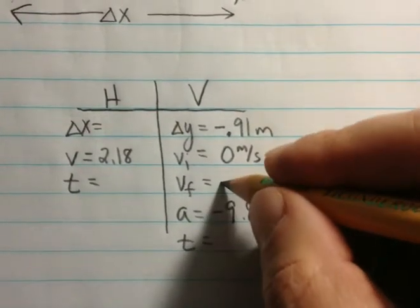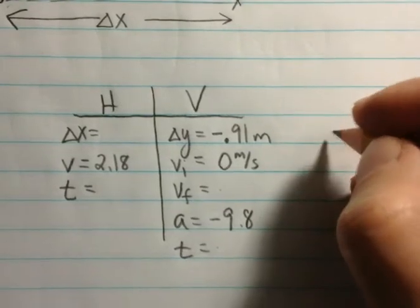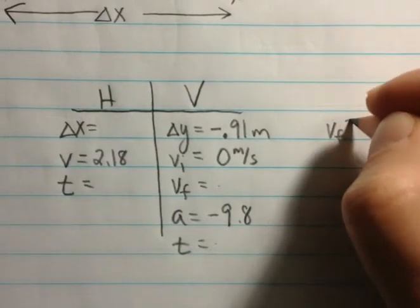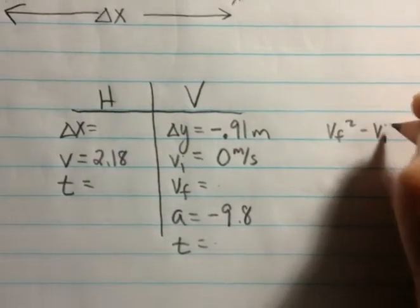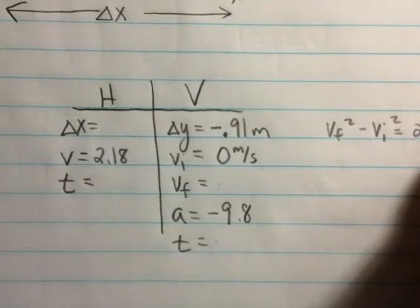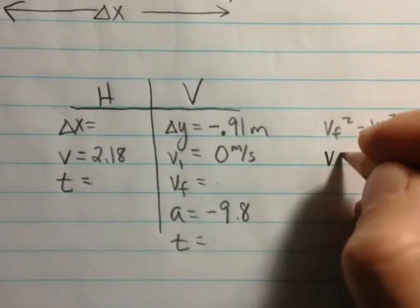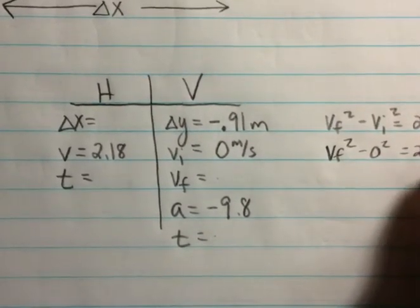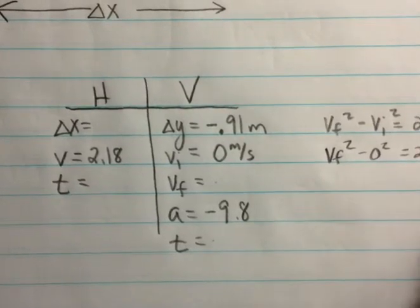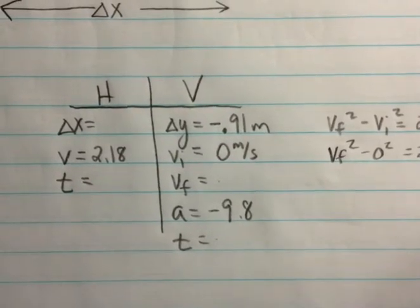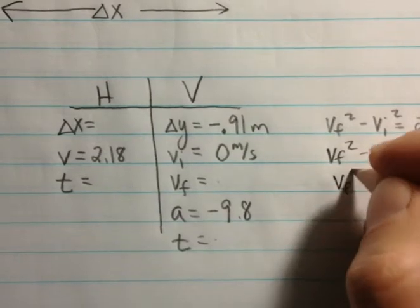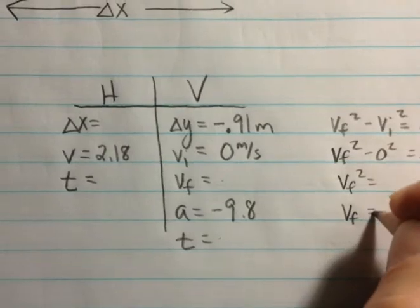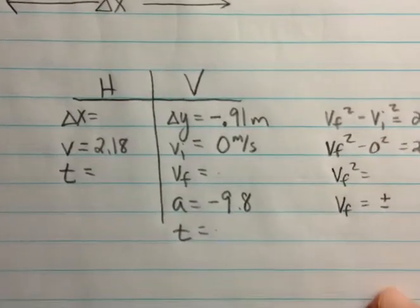What you want to do is do the vertical side first. You need to find vf and you need to find time. You can use any of your equations of motion that'll work. Probably the best one to start with is vf squared minus vi squared equals 2a delta x. You'll use this to find the final speed. Your initial speed is 0, your acceleration is negative 9.8, and your distance is 0.91. You're then going to multiply these out, get a value, take a square root of that value, and remember when you get your answer it's going to be either plus or minus.